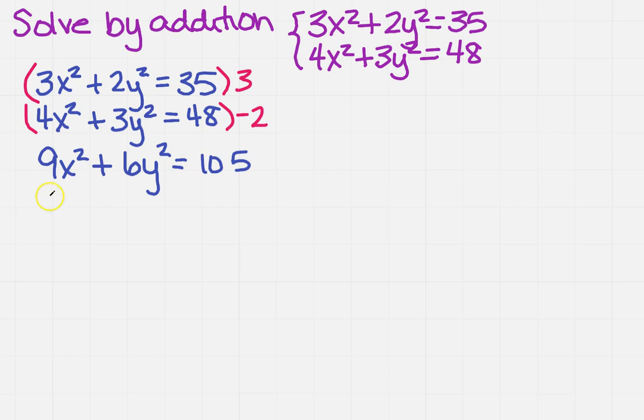And then on the other one, I'm going to get minus 8x squared, minus 6y squared equals, and then this one is by a negative, so it's going to have to be a negative, and it's going to be 96.